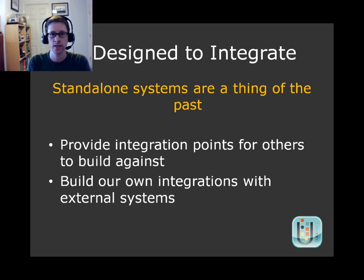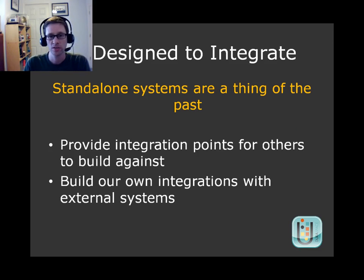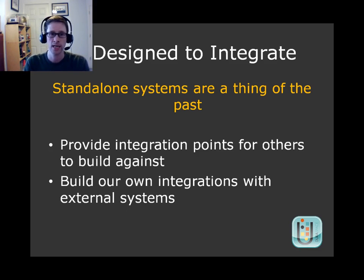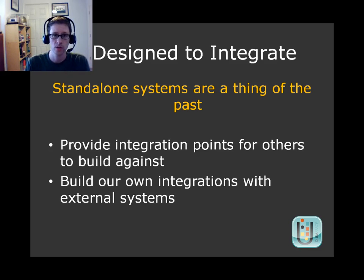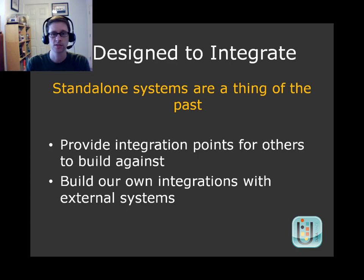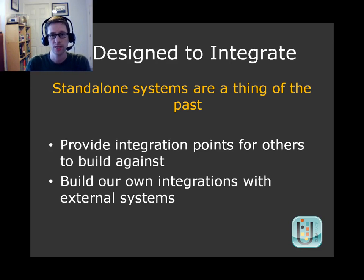The fourth point is that DSpace needs to be designed to integrate well. We all know that standalone silo systems are a thing of the past. We need to make sure DSpace continues to provide integration points for others to build against, and continues to build its own integrations against external systems — whether that's a scholarly communications ecosystem, an institutional ecosystem, a preservation ecosystem, or something else. We need to allow DSpace to play well with others.